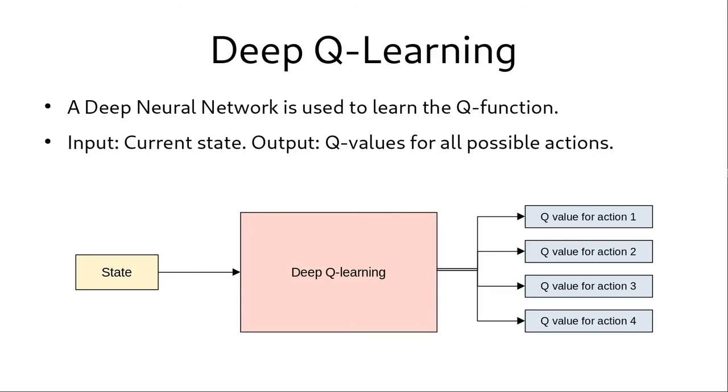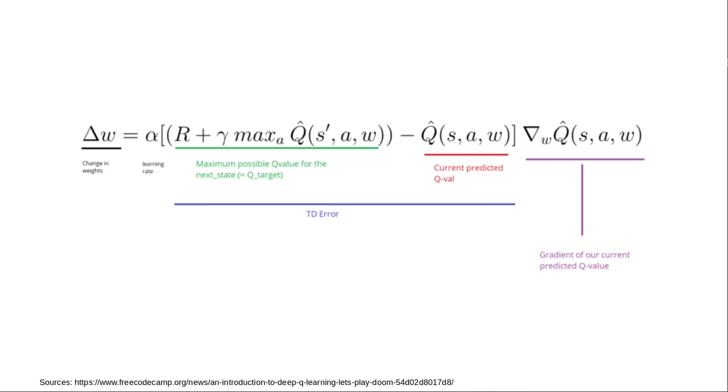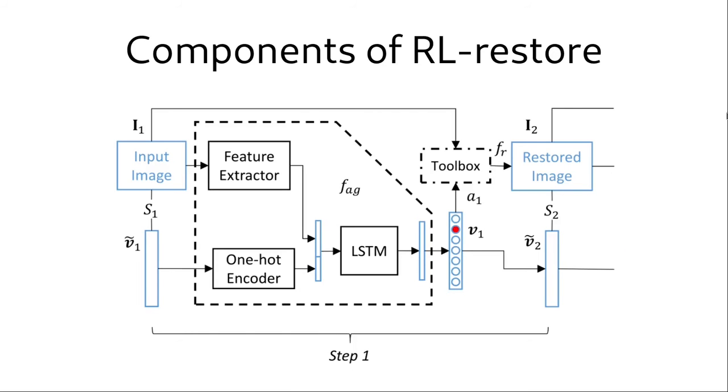We can use a deep neural network to learn the Q function. And the deep Q learning algorithm utilizes this exact approach. We give the current state or observation as input to a deep neural network. And we get Q values for all the possible actions as the output. This equation gives the weight update for the deep neural network that approximates the Q function. We can see that this part is the Bellman equation that we have seen earlier. By subtracting it from the current Q value, we get this loss. And this loss, when multiplied with the learning rate and the current gradient, we get the weight update.